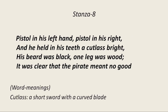The pirate had a pistol in his left hand, a pistol in his right, and he held in his teeth a cutlass bright — a cutlass is a short sword with a curved blade. The poet describes how dangerous the pirate was: two pistols, one in each hand, and a sharp sword between his teeth. His beard was black and one leg was wood, meaning he was crippled. It was clear that the pirate meant no good — they understood he had come to kill them.